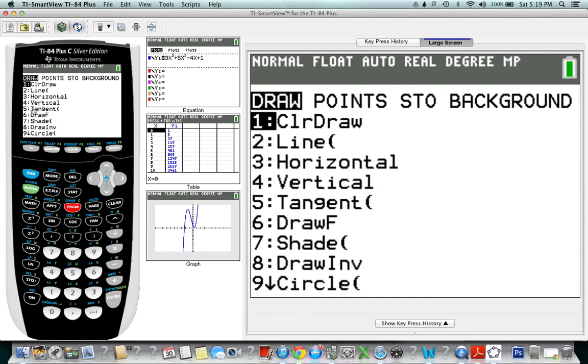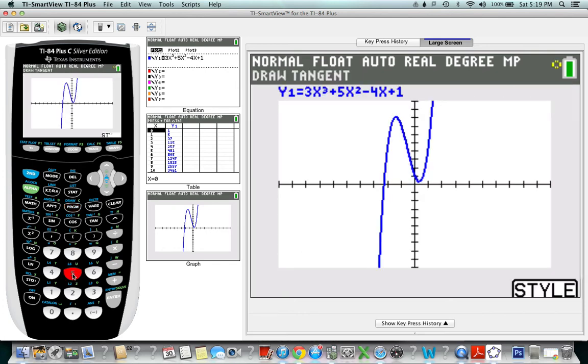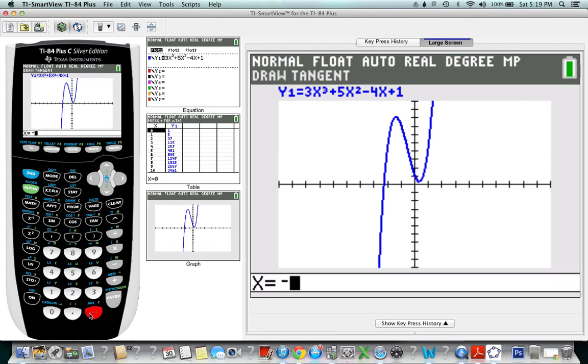And as you can see, the fifth option is for the tangent. So we go to 5. We want it when x is negative 2, so we type negative 2 and then enter that.